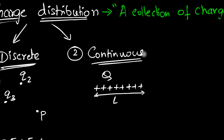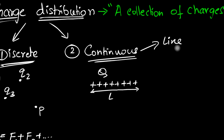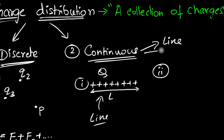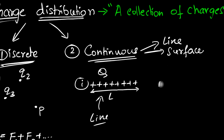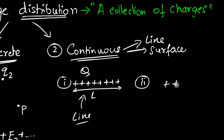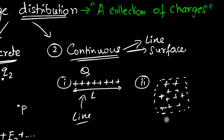You can have three kinds of continuous charge distribution. First, a line distribution — charges distributed along a line. Second, a surface distribution — charges distributed over a two-dimensional surface. The total charge is q and the surface has some area A.